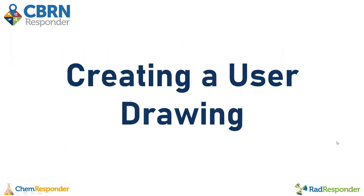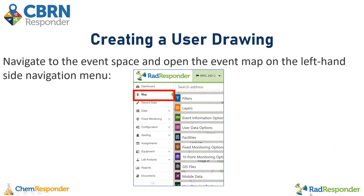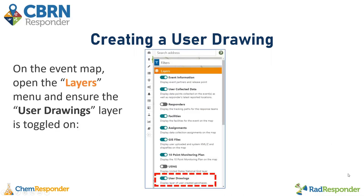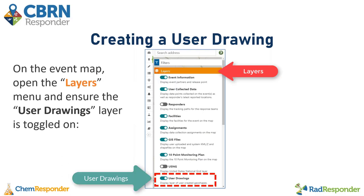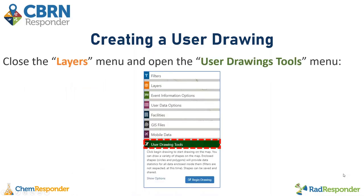To start, I'm going to show how to create a user drawing and the different types you can create. You'll want to make sure you're in the event space and open the event map from the left-hand side navigation menu. Once on the map, you will see the layers menu — open that up and ensure the user drawings option is toggled on. Then close the layers menu and open up the user drawings tools menu.